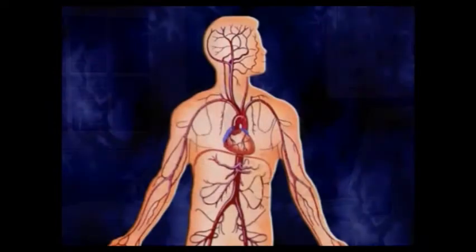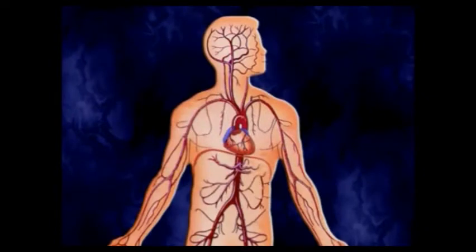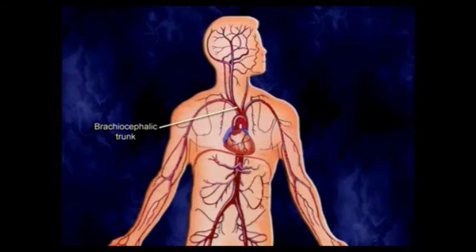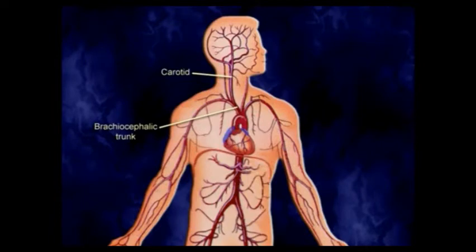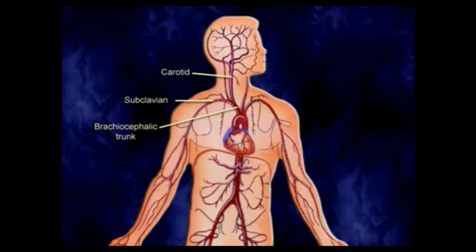A trunk comes out of the aorta called the brachiocephalic trunk — meaning arm and head. Brachio means arm; cephalic means head. As soon as it gives off its branch to the head, which is the carotid artery, it should theoretically become the brachial artery. But we name it for the neighborhood: this short segment goes right under the collarbone, called the clavicle, so it becomes the subclavian artery. Then it goes through the armpit, becoming the axillary artery, because the armpit is called the axilla.